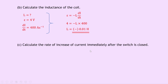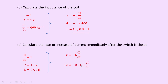Part C says to calculate the rate of increase of current immediately after the switch is closed. We're trying to find dI/dt at that moment. Epsilon is 12 volts just at that point and inductance L is 0.01 Henrys. Using epsilon equals minus L times dI/dt, substituting in gives 12 equals minus 0.01 times dI/dt. Rearranging gives minus 1200 amps per second — the magnitude is what's important here.